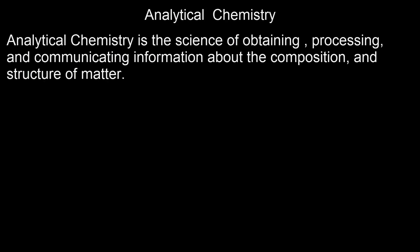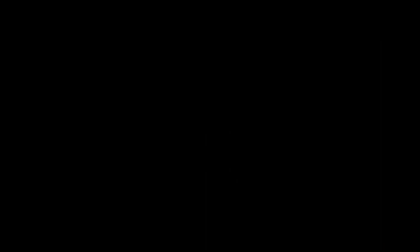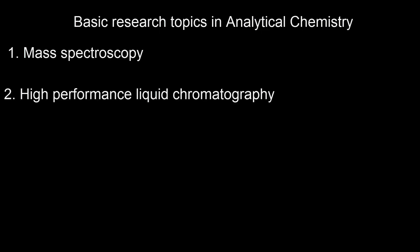The third branch of chemistry is analytical chemistry. Basically, analytical chemistry is the science of obtaining, processing, and communicating information about the composition and structure of matter. A basic example is in the forensic field where drugs come in the form of various colored powders and you have to analyze them to find out their content — that comes under analytical chemistry. Basic topics for a PhD in analytical chemistry are mass spectroscopy, high performance liquid chromatography, and acid-base mixture related topics.